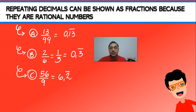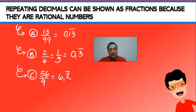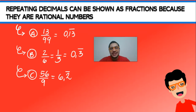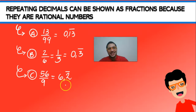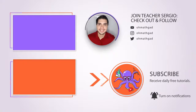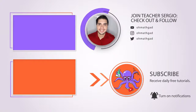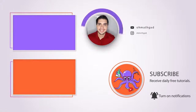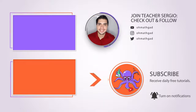Try solving these problems on your own and practice those divisions. Remember, when you put a line on top of a decimal digit, you're saying it's a repeating decimal. Feel free to re-watch if you don't understand something. Check out these other videos to improve your math skills, subscribe to help the community grow, follow Oh Math God on social media, and see you in the next one!